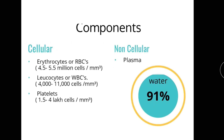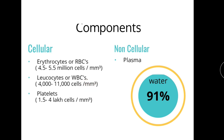Looking at the components of blood: the cellular components include erythrocytes or RBCs at 4.5 to 5.5 million cells per cubic millimeter, leukocytes or WBCs at 4,000 to 11,000 cells per cubic millimeter, and platelets at 1.5 to 4 lakh cells per cubic millimeter. Try to concentrate on these values — they will definitely help you in your viva.